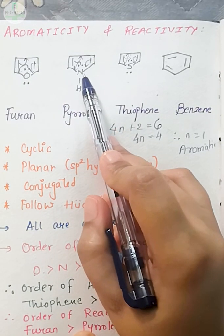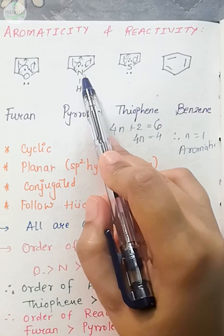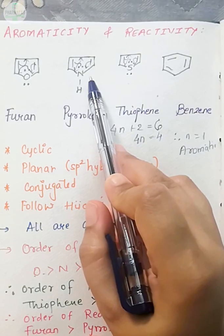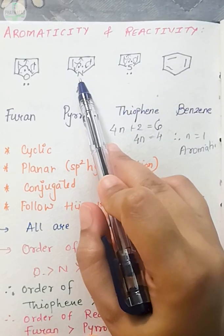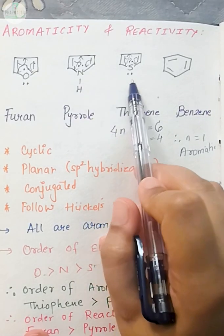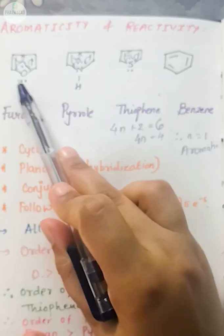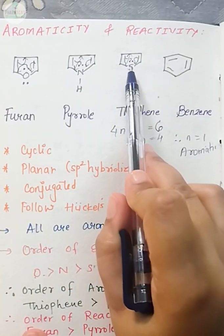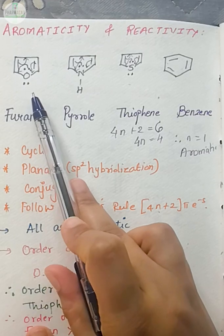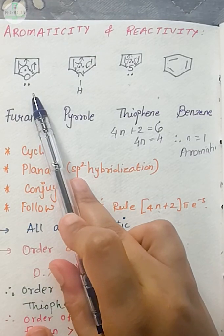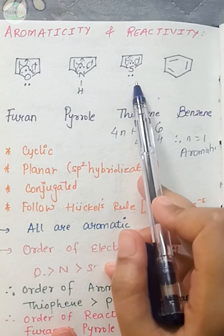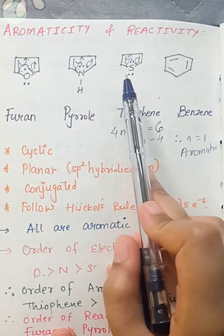Similarly, nitrogen also has the same tendency because it is also electronegative. But compared to oxygen, nitrogen is less electronegative. Since it is less electronegative, nitrogen's lone pair has a slightly better chance to go into conjugation. But sulfur being least electronegative out of the three, its lone pair will easily go into conjugation.